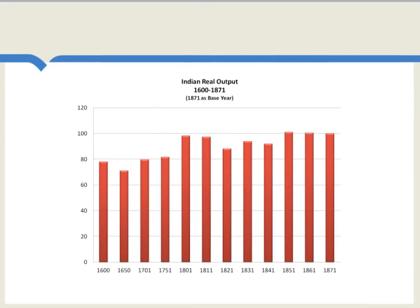In large part because population is growing, we can see that total Indian real output has somewhat of an upward trend over these centuries. But nonetheless, if we look at the 19th century, we see that over a period of 70 years under British rule, Indian real output is barely going up at all.